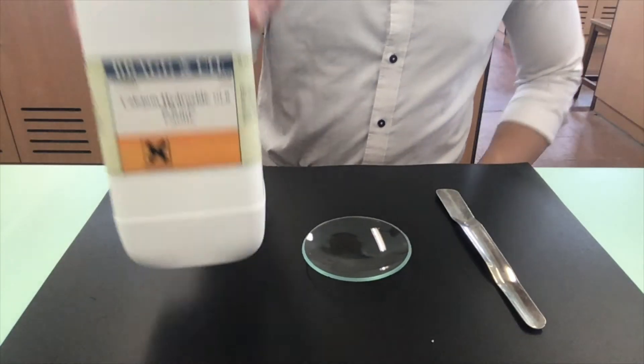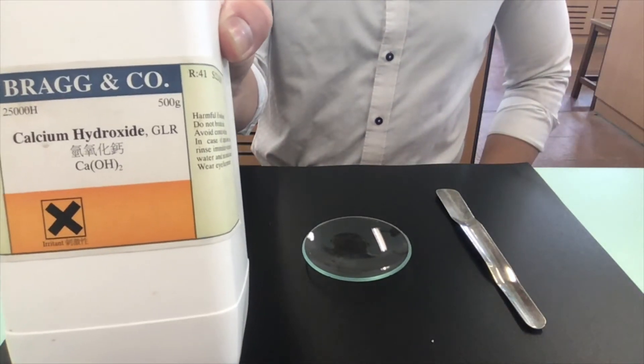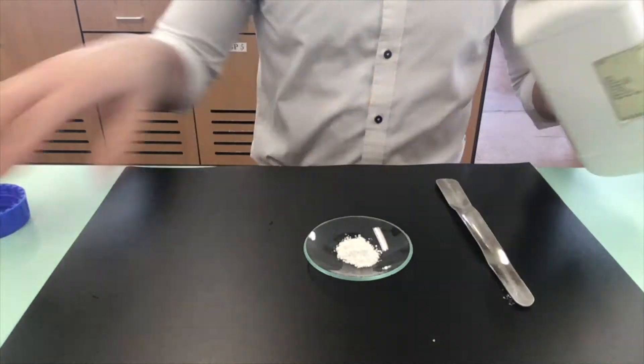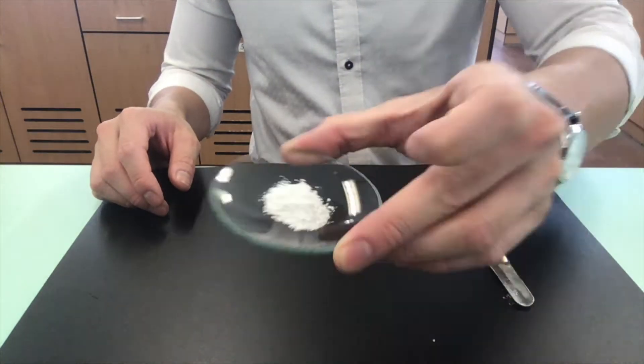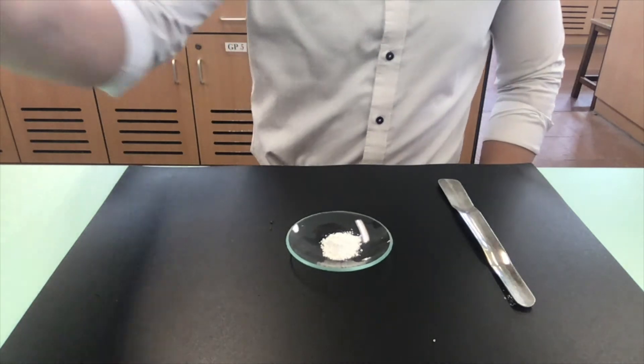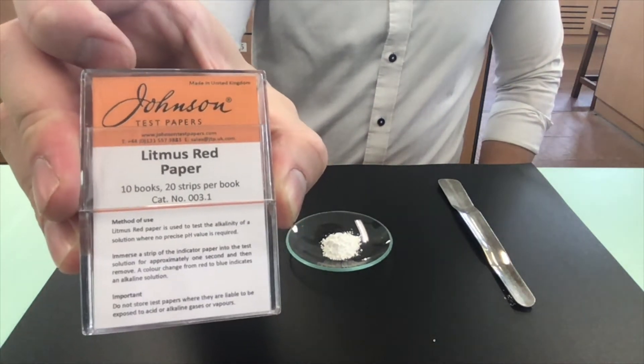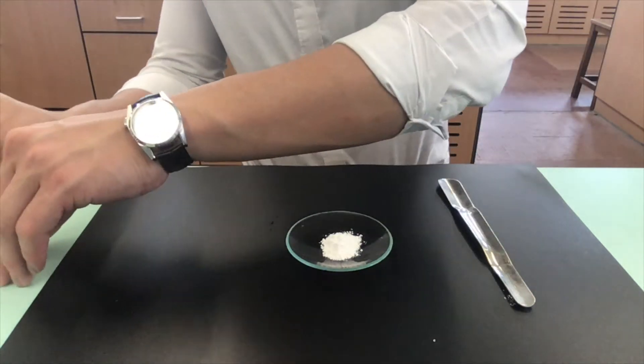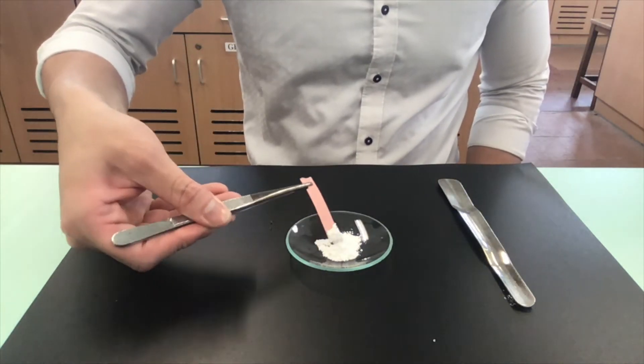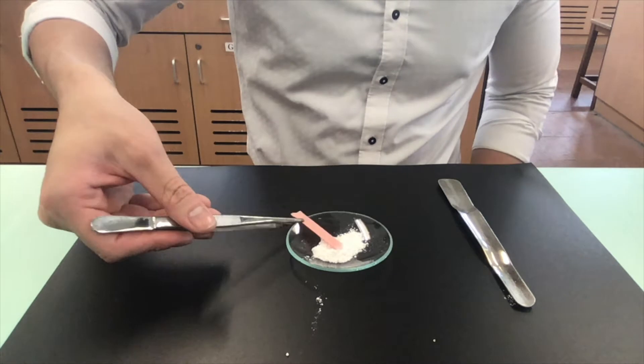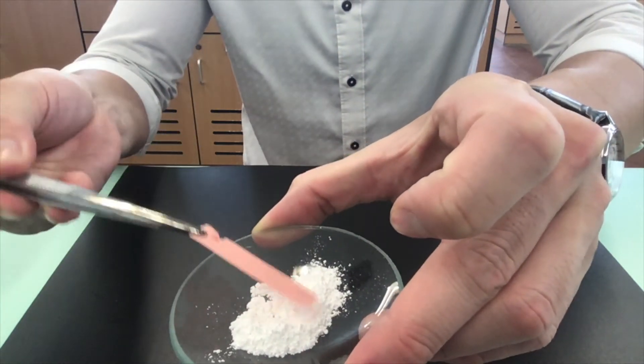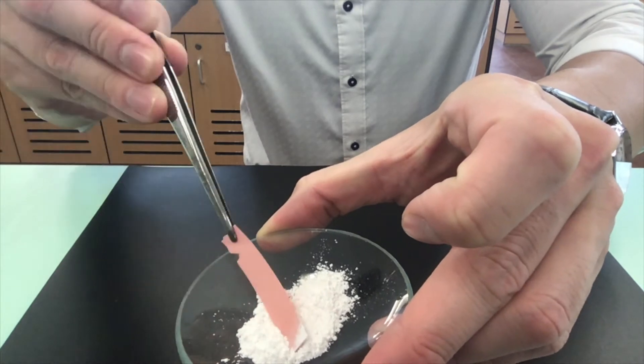This is a sample of calcium hydroxide solid. Solid calcium hydroxide is a white powder. We will test the solid using red litmus paper. There was no color change on the red litmus paper, meaning that the alkali didn't show its alkaline property.